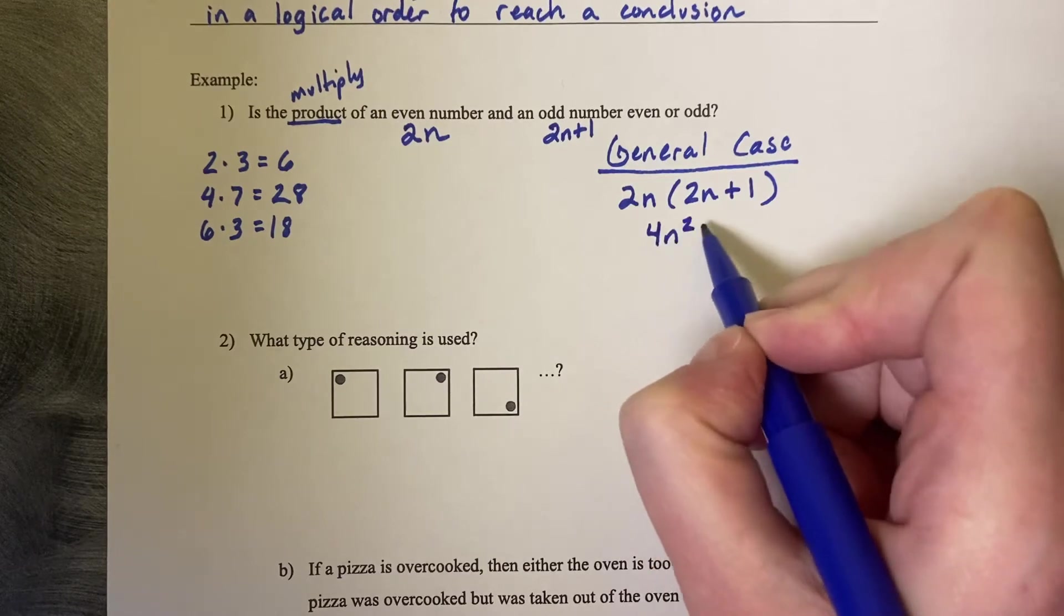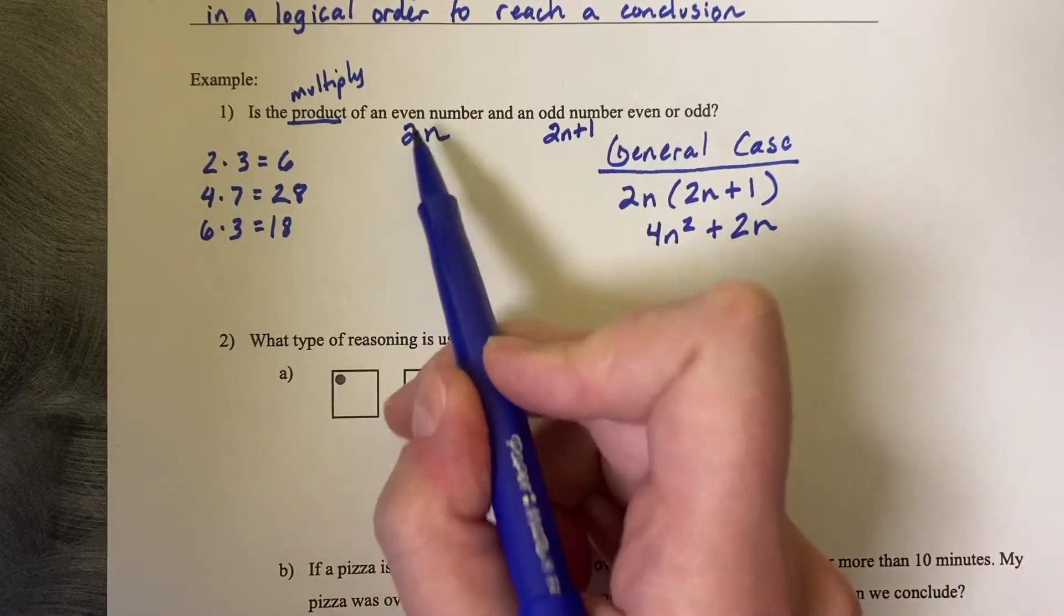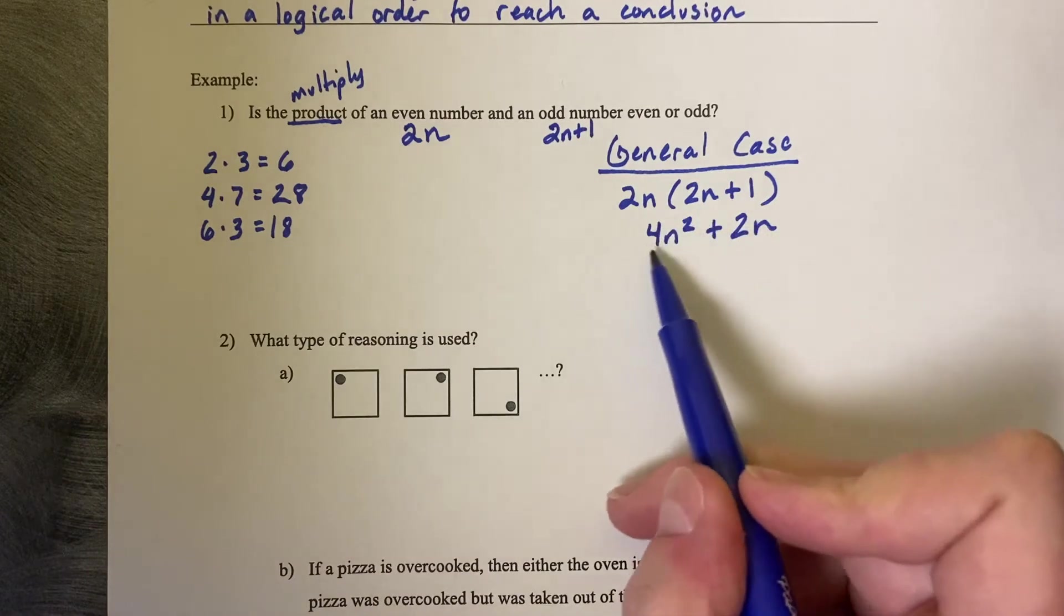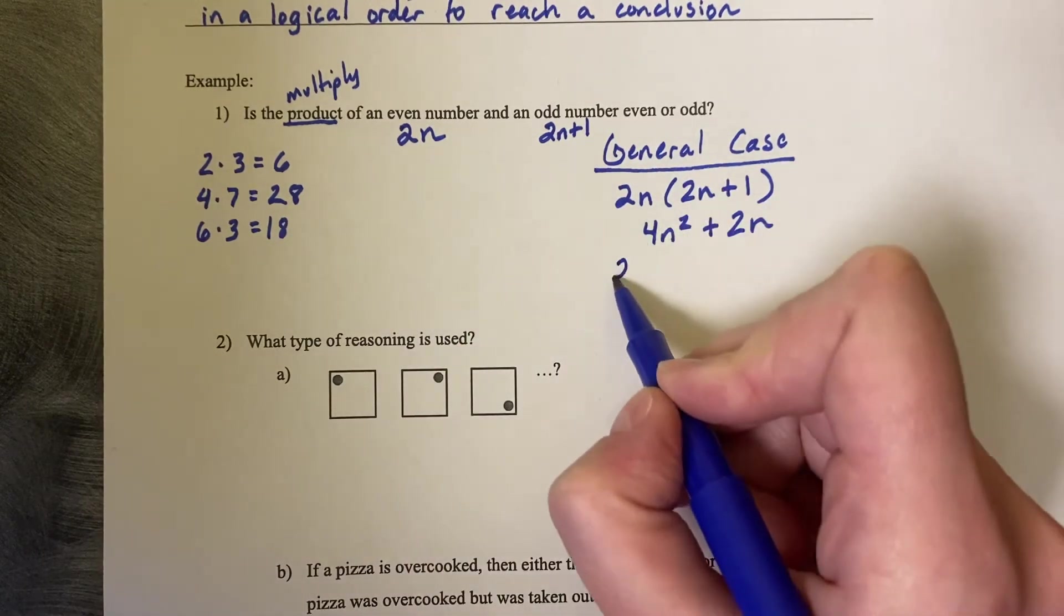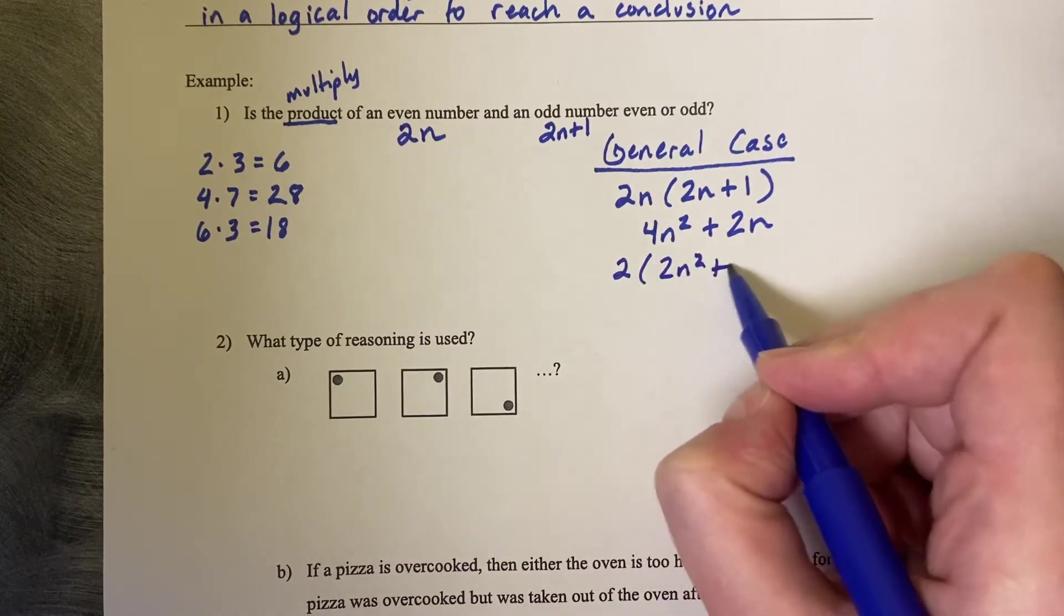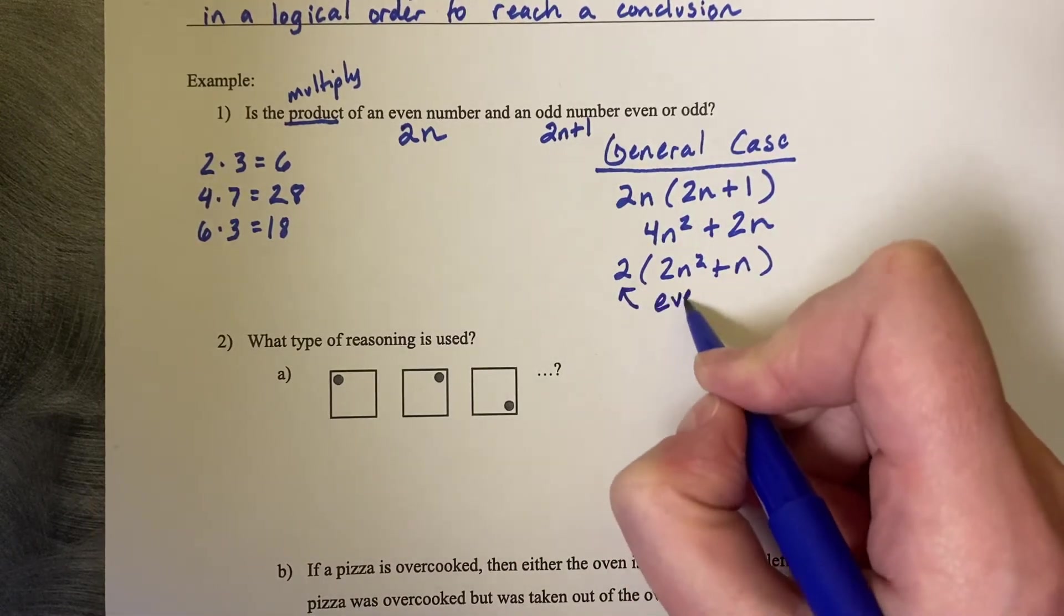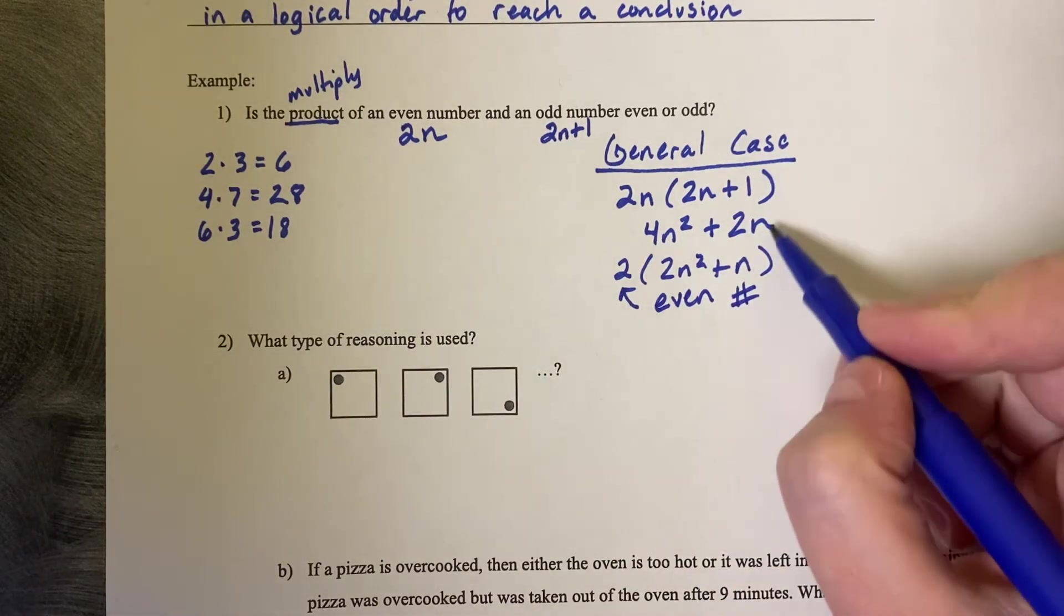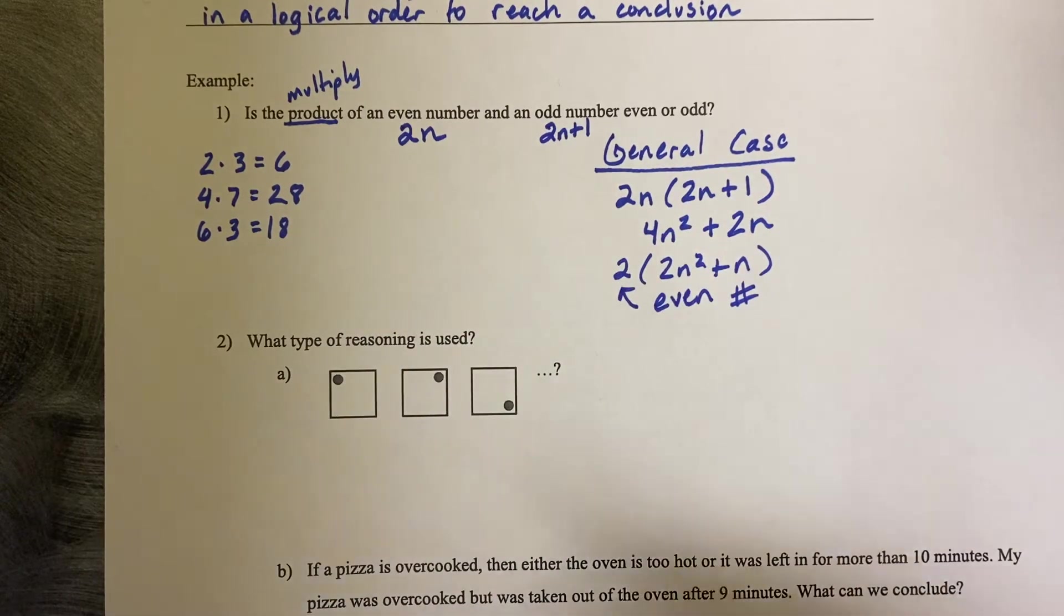Distribute, that's 4n squared plus 2n. And what are we looking for? What we're looking for is does that result in an even or odd number? So what we need to do is actually refactor this and see if this can be divisible by 2. Which in fact it can, if I pull out a 2 in front, 2 times 2n squared plus n is as factored as this can get. So because of this 2, it makes an even number. This right here is deductive reasoning. I'm using the general case to say that this is true for all cases, not just an inductive reasoning pattern where I've only given 3 cases. This does not encompass the infinite amount of even and odd numbers that exist in the world, but this does.